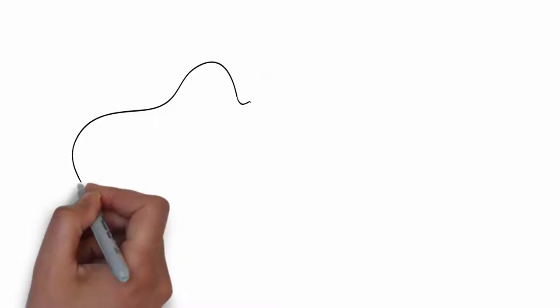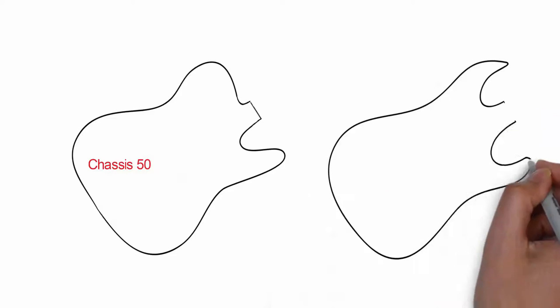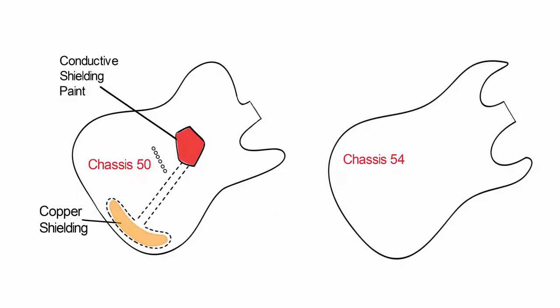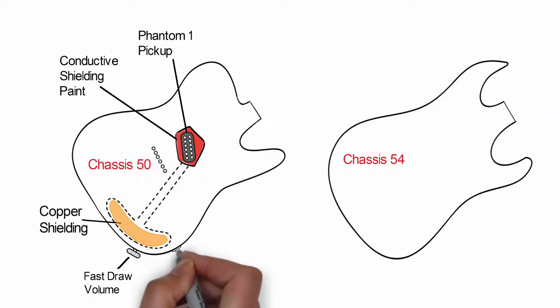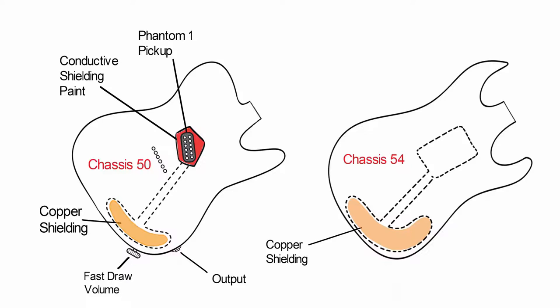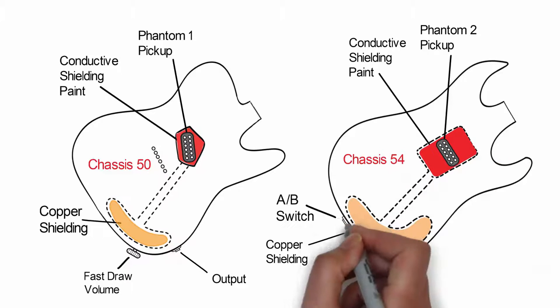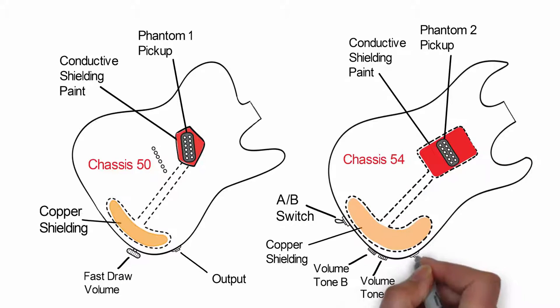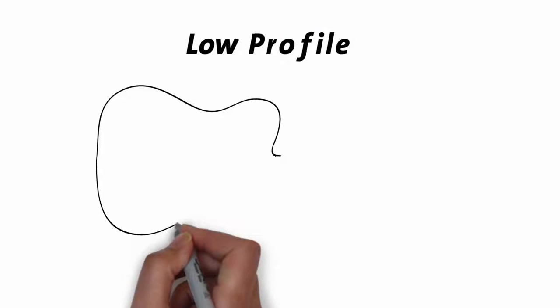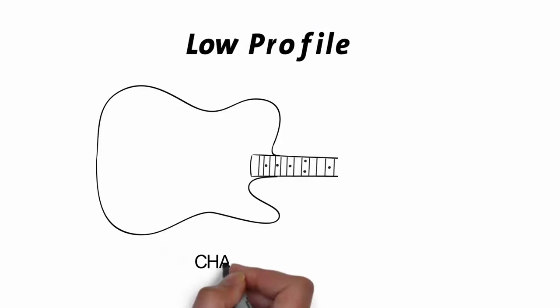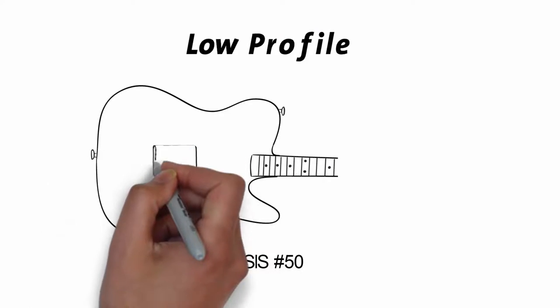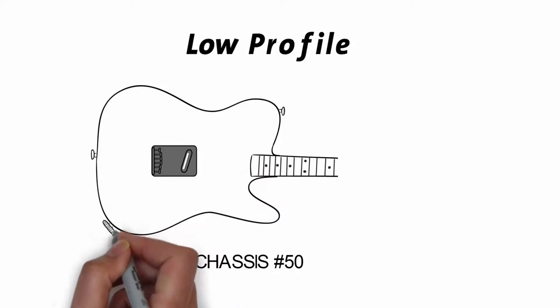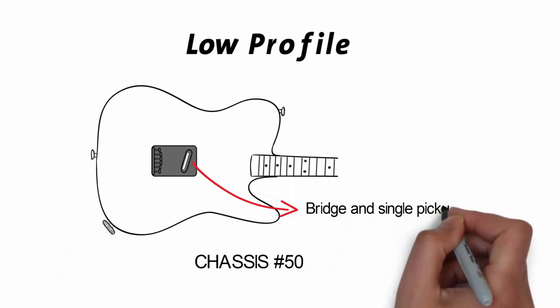Step 1: The process begins with your selection of the guitar's chassis and its profile, a profile being the design for the placement of electronics and hardware. A low profile clears the face of the guitar, leaving only the bridge and pickup, accenting the beauty of the instrument's shape and wood.